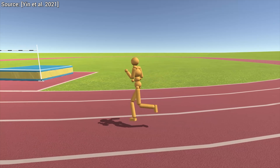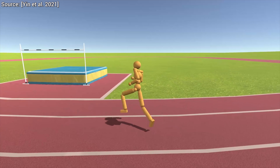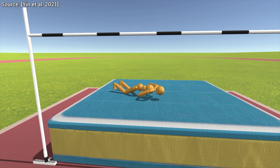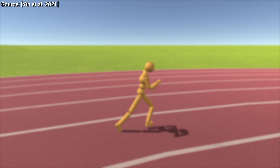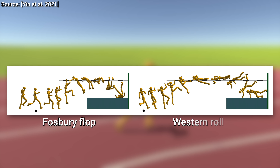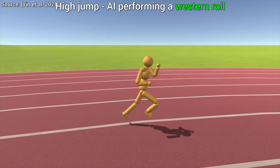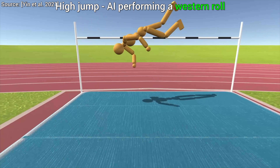If we lower the bar just a tiny bit for this virtual athlete, we can also observe it performing the Western Roll. With this technique, we take off a little earlier, and we don't jump backward but sideways. If it had nothing else, this would already be a great paper, but we are not nearly done yet.